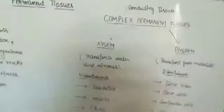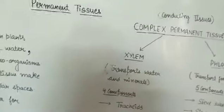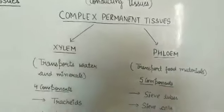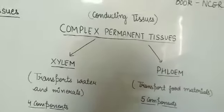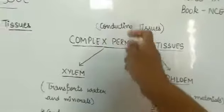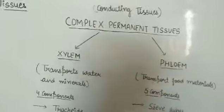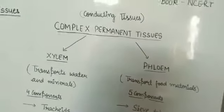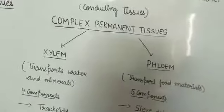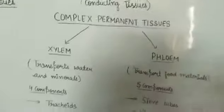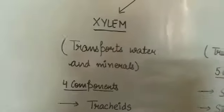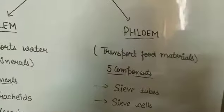Now we come to the next classification of permanent tissue: complex permanent tissue. Complex permanent tissues are the conducting tissues — they conduct something within the plant. There are two examples: xylem and phloem.